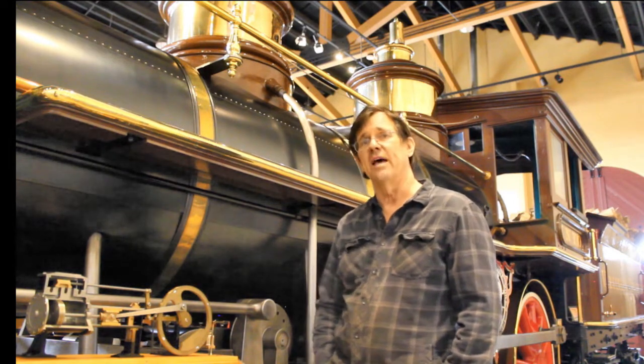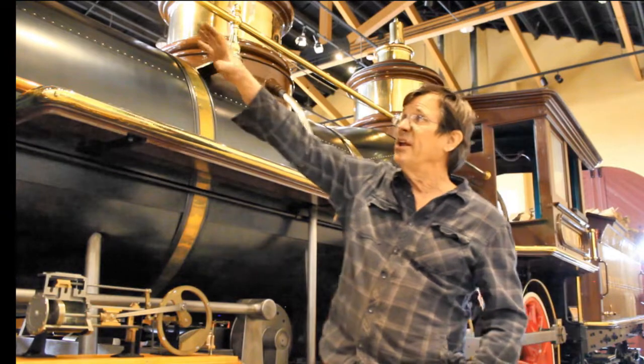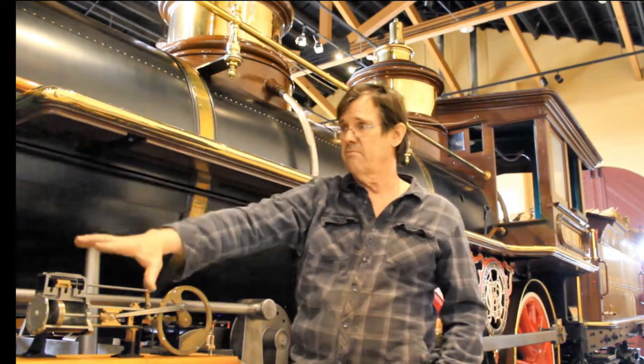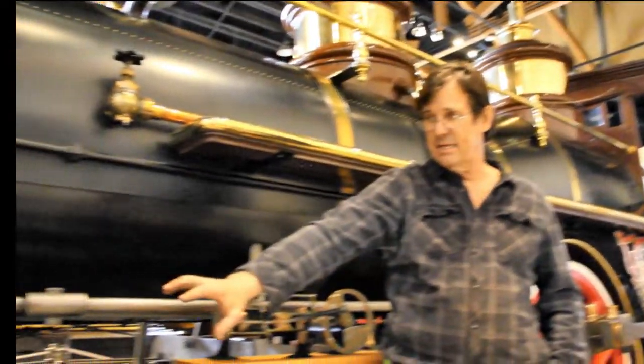Inside that dome is a valve. The engineer can open that valve, letting steam through a series of pipes that run inside the boiler, and then down in the front in a curve into this area, which is the steam chest and the piston.